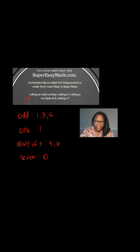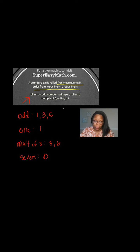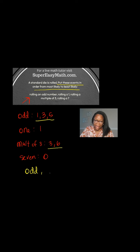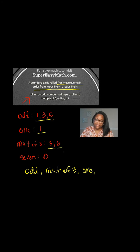To answer the question, it says put these events in order from most likely to least likely. Most likely means there are more choices for it. The odd option is the most likely because there are three different possibilities. The next event with the most options is the multiple of three, which has two choices. Next is rolling a one. The event with the least probability is rolling a seven, because that can't happen at all.